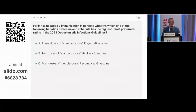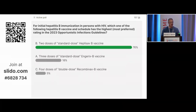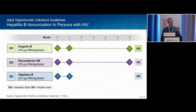A quiz question: for initial immunization in HIV, which Hep B schedule has the highest preferred rating in the guidelines? A: three doses of standard-dose Engerix-B; B: two doses of standard-dose Heplosav-B; or C: four doses of double-dose Recombivax? The correct answer is B — two doses of standard-dose Heplosav-B is now in the guidelines as a new recommendation, updated in September. The current A2 recommendations are: double-dose Engerix-B, double-dose Recombivax, or standard-dose Heplosav-B — only two doses one month apart.